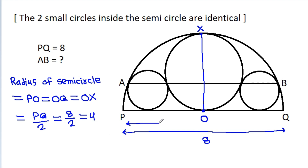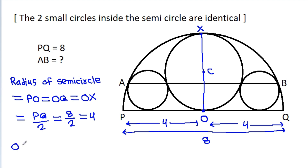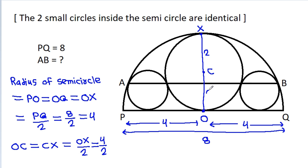So PO is 4, OQ is 4, and OX is 4. Now suppose the center of the circle is C, then OC equals CX, which equals OX divided by 2, and that equals 4 divided by 2, which is 2. So CX is 2 and OC is 2.